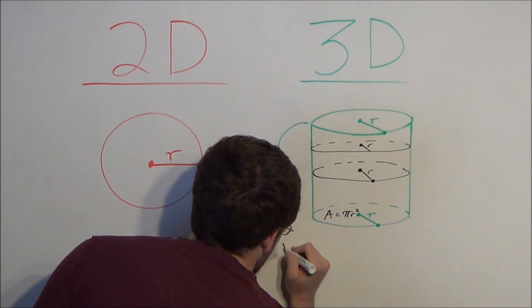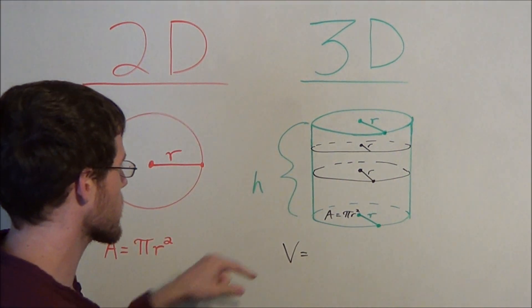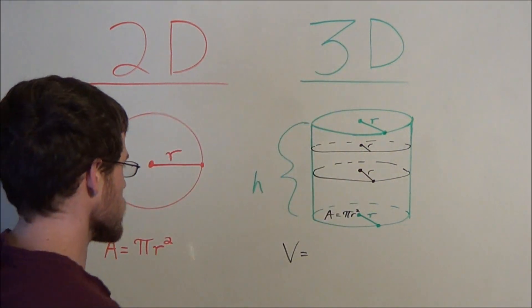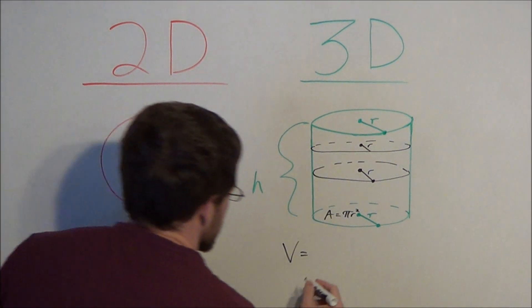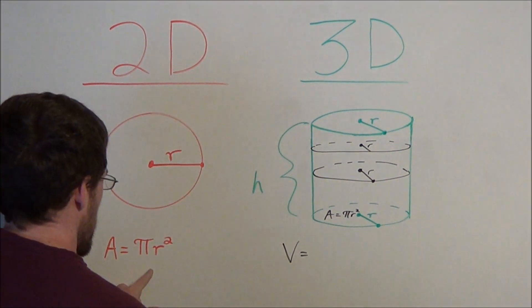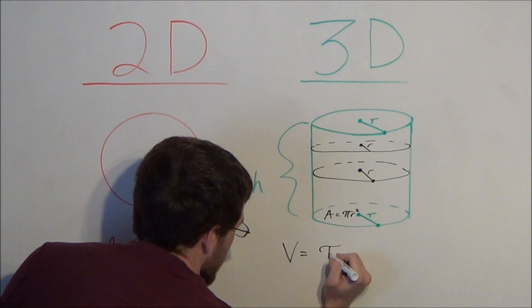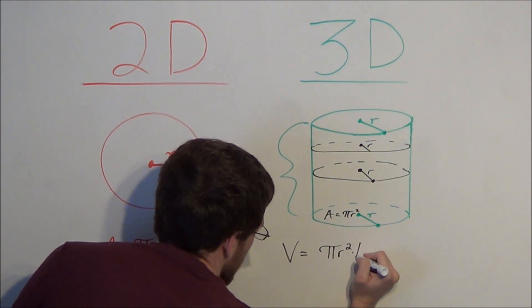The height of the cylinder determines how high we're going to stack these individual two-dimensional circles. So it will follow that the volume of a cylinder is simply pi r squared, but now we're going to multiply by this new dimension, height.